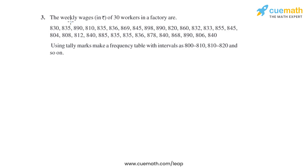Question 3 of this exercise says: the weekly wages in rupees of 30 workers in a factory are given. Using tally marks, make a frequency table with intervals as 800 to 810, 810 to 820, and so on.